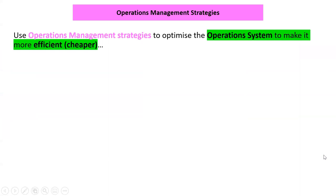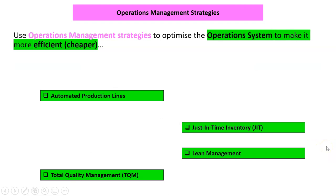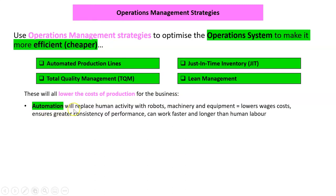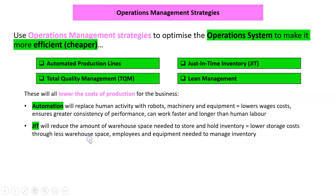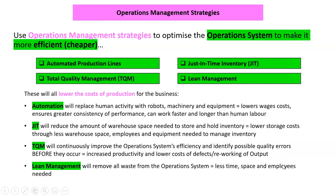Lastly, we can implement operations strategies to make our business more efficient or cheaper. I'm going to highlight four key ones. Automation gets rid of humans with robots — robots work longer and faster. Just-in-time inventory reduces the warehouse space you need, saving money on storage and people. Total quality management continuously improves operational efficiency and fixes errors before they occur — that's cost savings. And lean management eliminates waste, meaning less time, less space, and fewer employees needed. Together, all these things bring down your costs and therefore your prices.